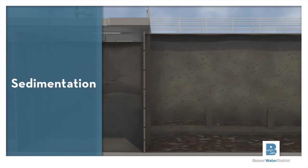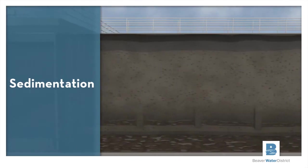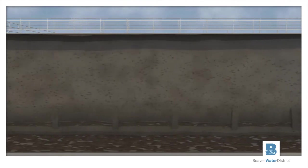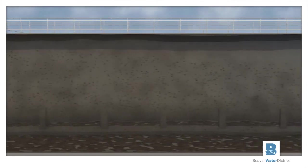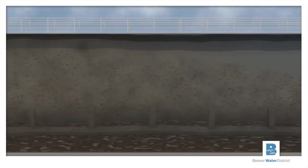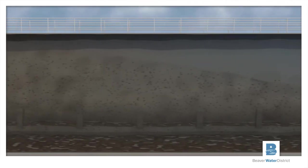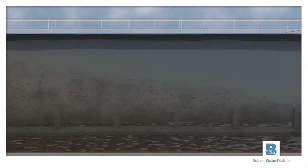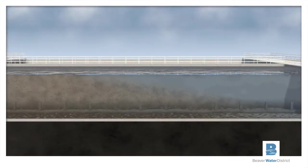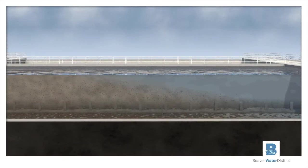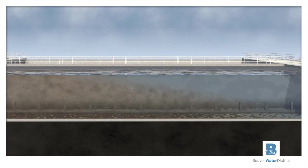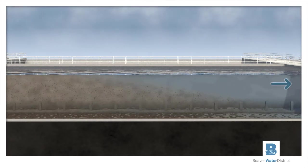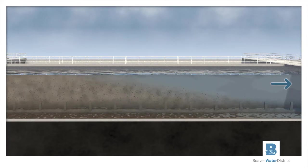Here we have enlarged and sped up the floc particles to better illustrate the sedimentation process. The larger floc particles are heavy enough to settle in the sedimentation basins. It takes at least three hours for the water to move from one end of the basin to the other, which allows the very small and light floc particles to settle to the bottom of the basin.